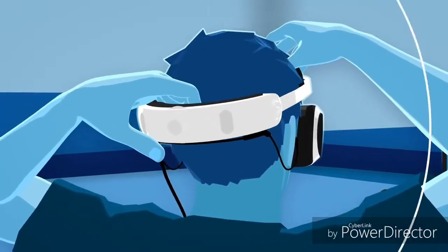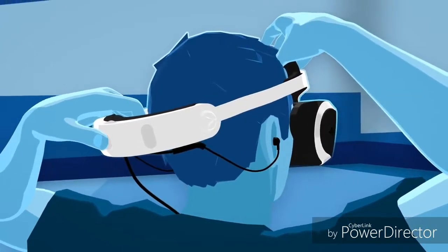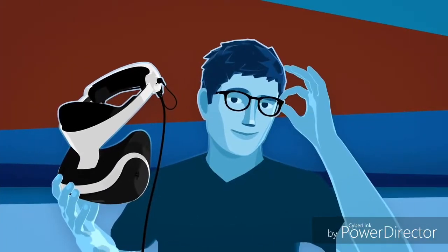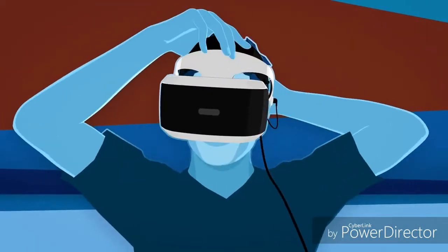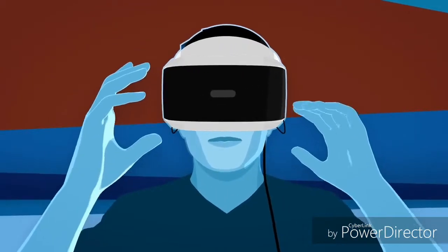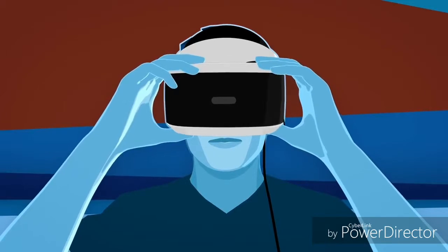To take the headset off, simply press the headband release button again. If you wear glasses, just put the headset on over them. Be sure to use the scope adjustment button to bring in the scope for a comfortable fit around your glasses.